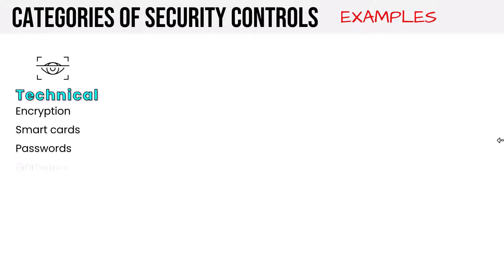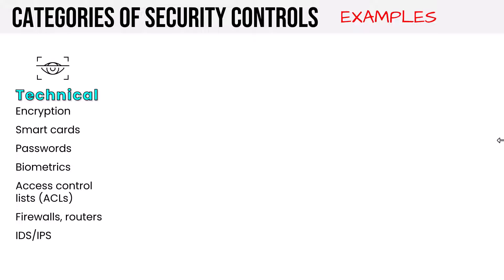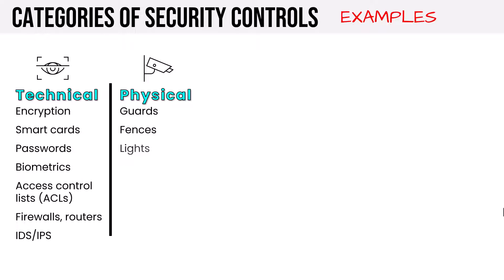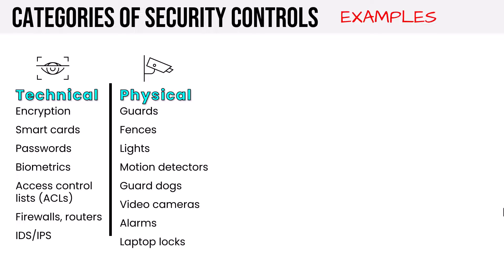Let me give you some examples. For technical controls: encryption, smart cards, passwords, biometrics, access control lists, firewalls, routers, and intrusion detection and prevention — it's the technology. For physical controls: guards, fences, lights, motion detectors, dogs, cameras, alarms, and locks — protecting what we can touch.